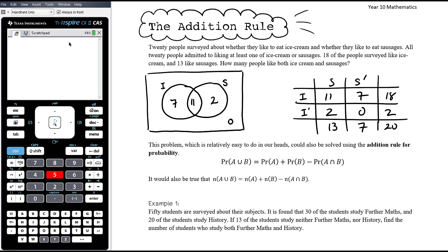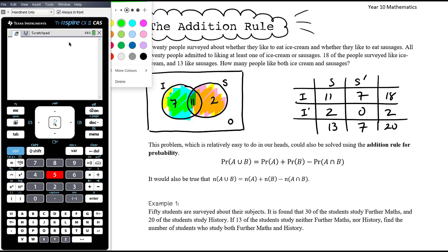This problem could also be solved using the addition rule for probability. The addition rule states that the probability of A union B equals the probability of A plus the probability of B minus the probability of A intersection B. That's because if we add up A plus B, we've counted the intersection twice, so we need to subtract it once to get the union. This works whether you use probabilities or counts — it's the same property.